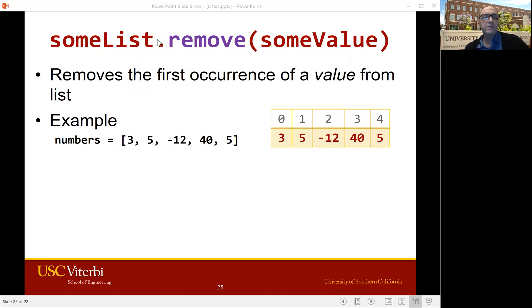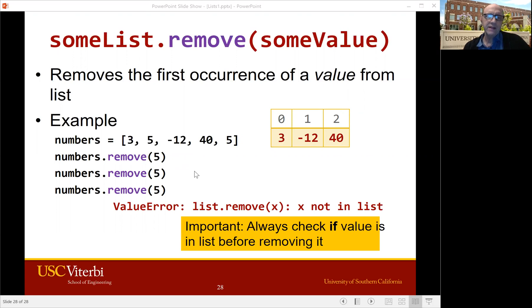Okay, so here is how you do remove. Name of the list dot remove and then in parentheses a value. Not the index in this case. This is the actual value. So here's an example. We have a list numbers 3, 5, negative 12, 45. Oh, it's got 5 on there twice. That's interesting. If we say remove 5, numbers dot remove 5, the first one disappears. And we're going to say it again and it's going to get the next one. And if we say it again, it causes a crash. You cannot remove something from the list if it's not on the list. So we'll have to check for that.